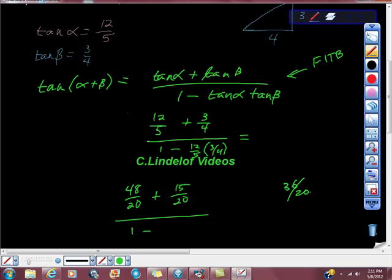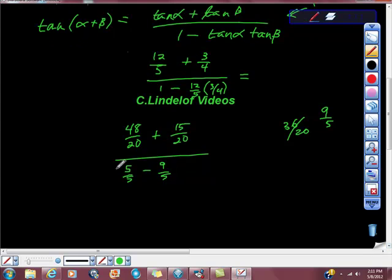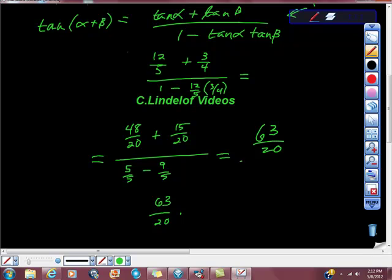In the denominator, 1 minus 36/20. That reduces to 9/5. So we have 5/5 minus 9/5, which equals -4/5. The numerator is 63/20. So we have 63/20 divided by -4/5.